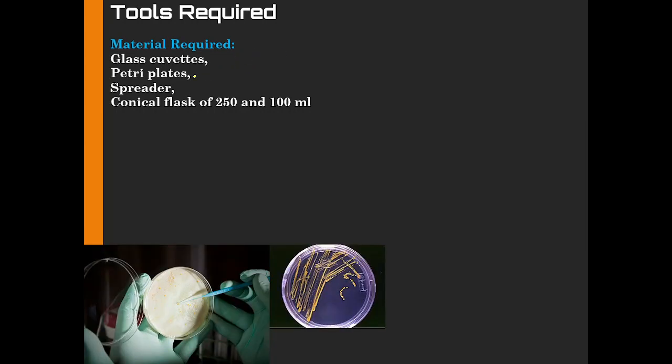Then you require the petri plates. The petri plates are required for the initial streaking of the cells when they are acquired as a fresh culture from a culture collection or maybe from a glycerol stock. They have to be streaked and it may take around roughly two days to revive a culture.